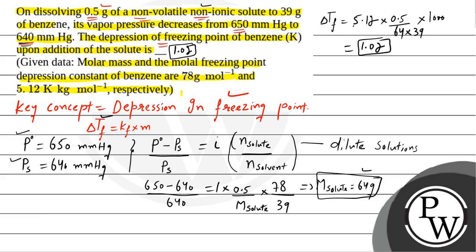To recap: ΔTf = Kf × m, where molality = (moles of solute) / (mass of solvent in kg). Moles of solute = 0.5 g / 64 g/mol; mass of solvent = 39 g = 0.039 kg. This gives ΔTf = 1.02. I hope you understood the question well. Thank you, all the best.